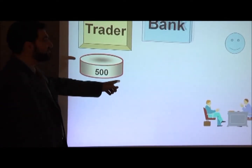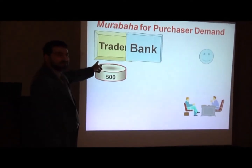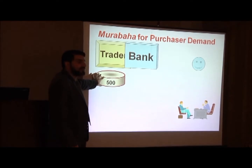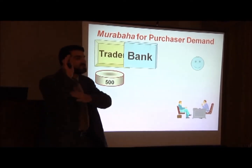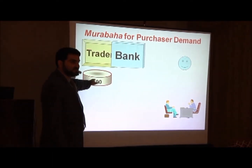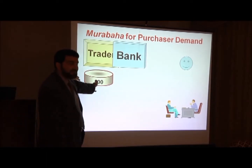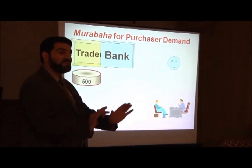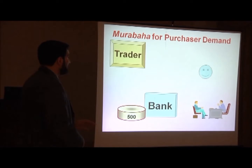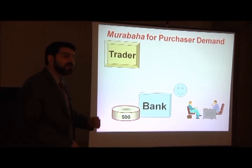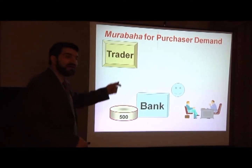Afterward the bank or its agent goes to the trader asking for the same goods according to the quotation. The bank will own it — become the real owner. This is step number two. Afterward the bank asks the customer to come and buy the goods from the bank. At this stage the customer signs the murabaha contract.